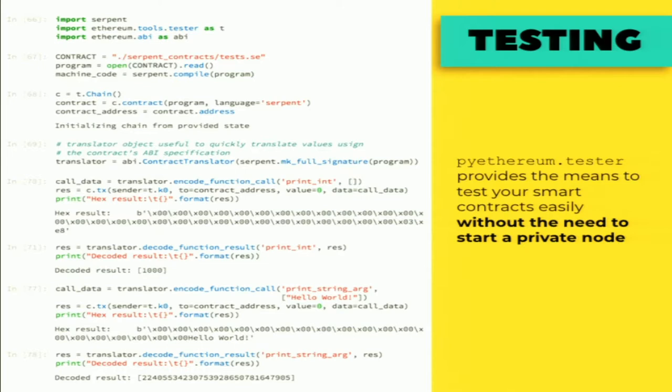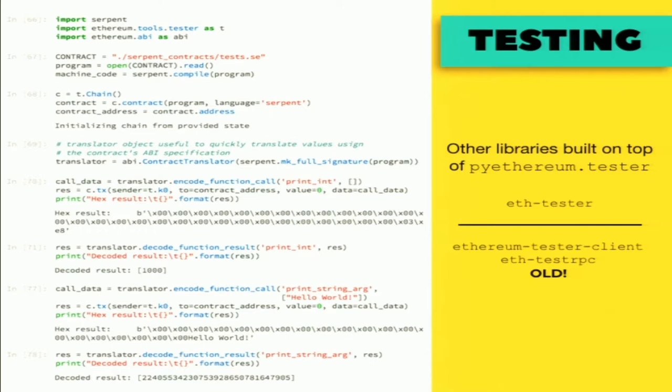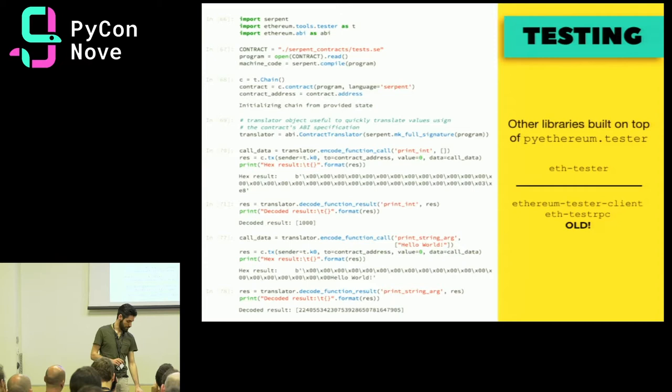There are other libraries for testing: eth-tester is a good library, a little bit higher-level than ethereum.tester, and you can use that — it's very easy to use. Just be aware that other libraries like ethereum.testerclient and eth-testerpc have been discontinued and are not compatible with the latest APIs.